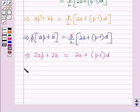Further, this implies 2ap plus 2b minus 2a equals p minus 1 the whole into d.